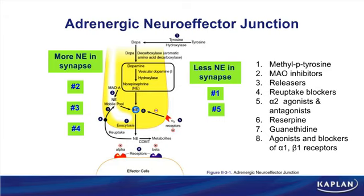Number six is where reserpine works. Reserpine works by destroying the storage vesicle — it damages and possibly destroys the vesicle, thereby depleting this neuron of norepinephrine and obviously decreasing the amount of norepinephrine in the synapse.